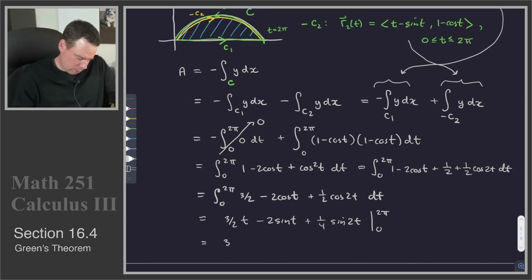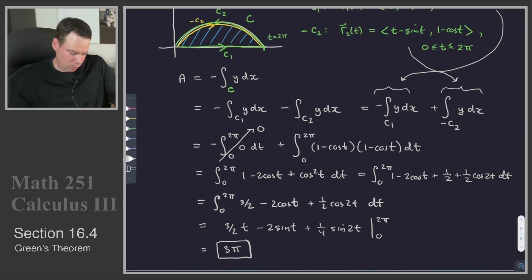And so that becomes 3 pi minus 2 times sin of 2 pi. That's 0. Sin of 4 pi is 0. And then plugging 0 in for everything, they all become 0. And so therefore, we get our answer. It is 3 pi. The area under 1 arch of the cycloid is 3 pi.